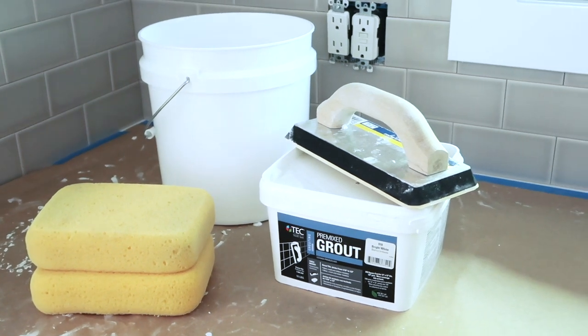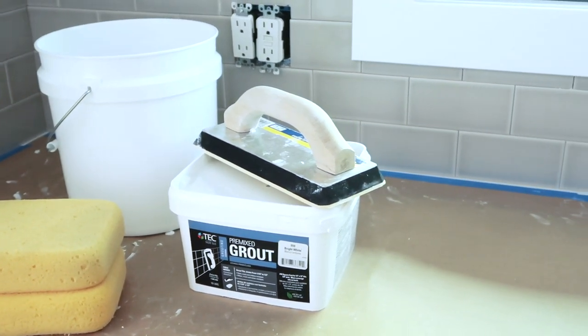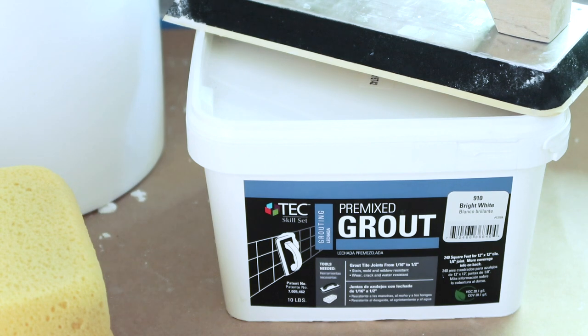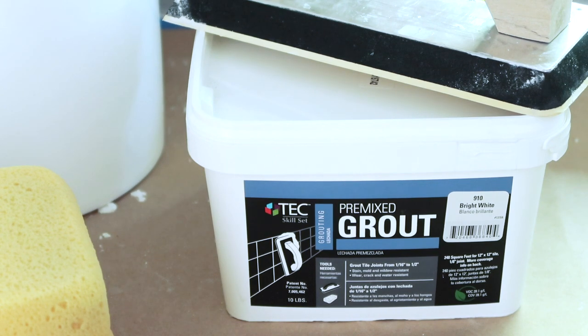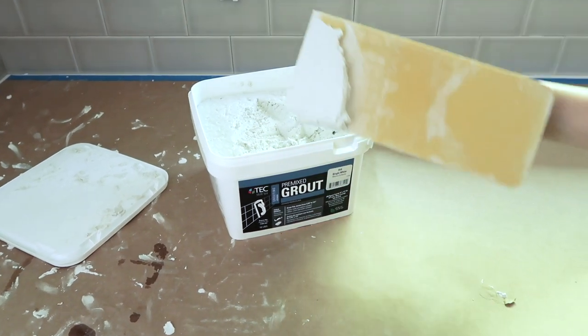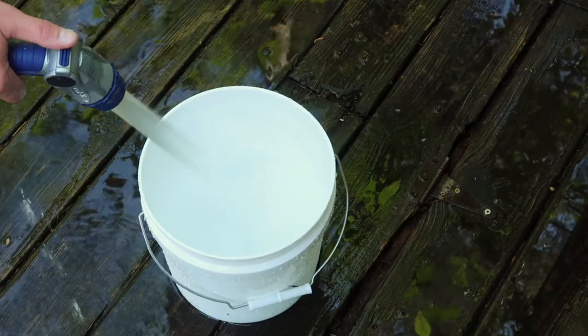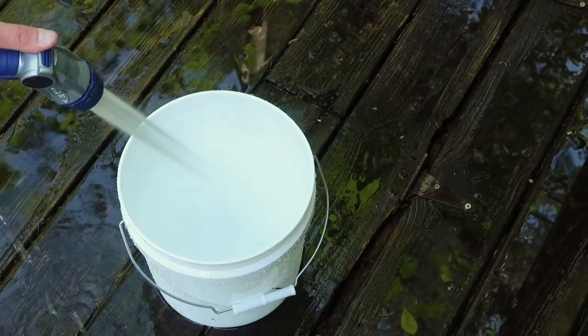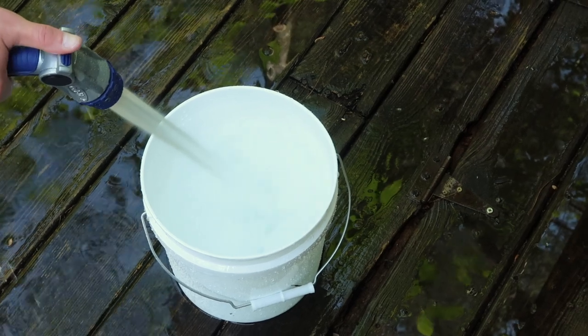So for grout you're going to need a few things and you need to work quickly as well. We chose a pre-mixed grout which makes the job just a little bit easier. We'll use the grout with a float, buckets, sponges, and a whole lot of water. And the closer you can be to your water source the better because it takes a lot.